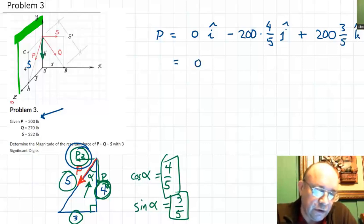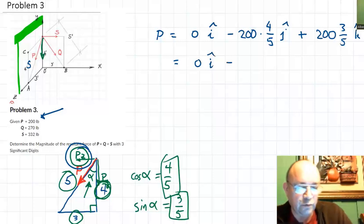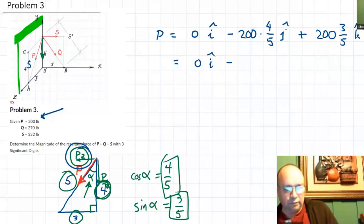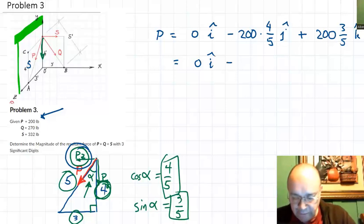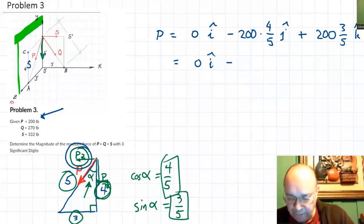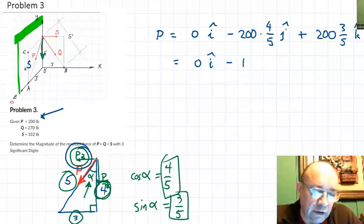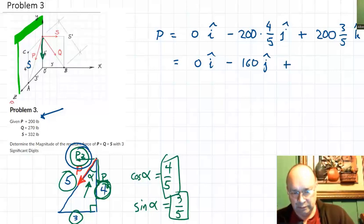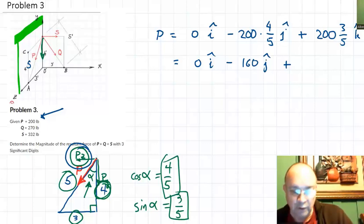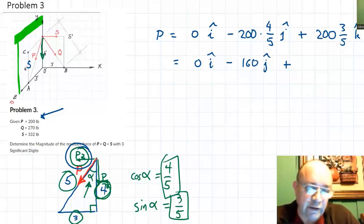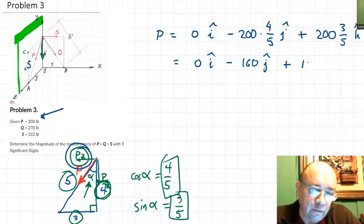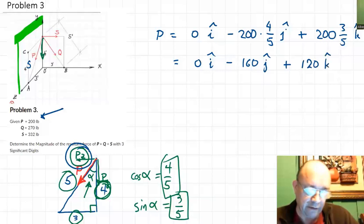So force P equals zero i, minus 200 times (4/5) j, plus 200 times (3/5) k. That gives P equals 0i minus 160j plus 120k. There you have force P decomposed into three components. Now let's do force Q.